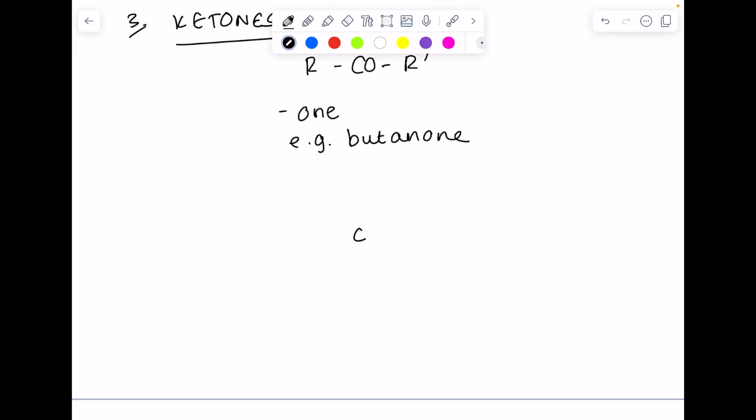So effectively, how you draw this is you show that C double bond O functional group, and then you need two different R groups on either end to make it a ketone. In the case of butanone, it looks like this. It's going to have four carbons. Here's the displayed formula of butanone.